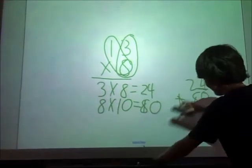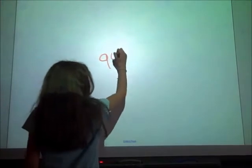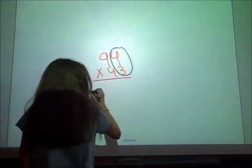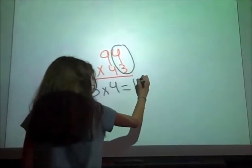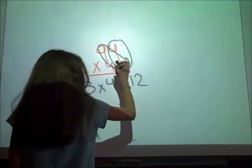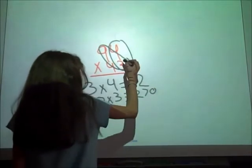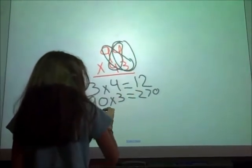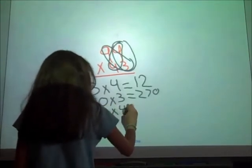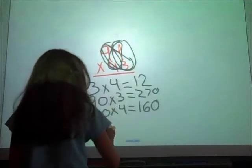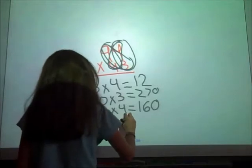So I'm going to finish this one. My problem is 94 times 34. Then multiply 3 times 4 equals 12, then 3 times 90 because 90 is in the tens place. Then multiply 40 times 4 equals 12, then multiply 40 times 90 because 90 is in the tens place.